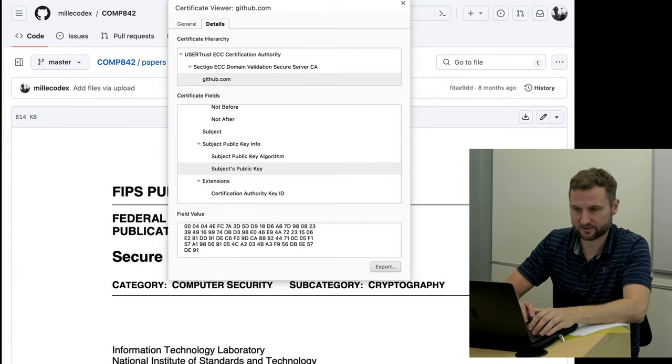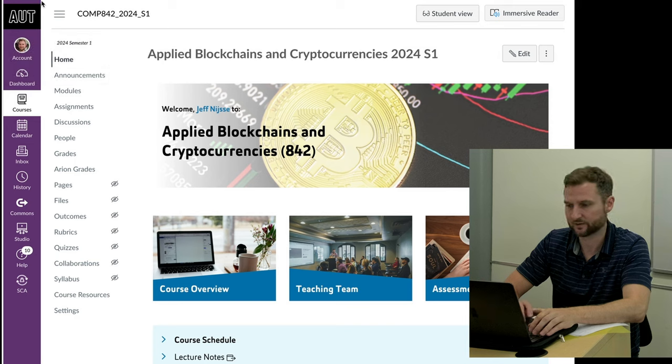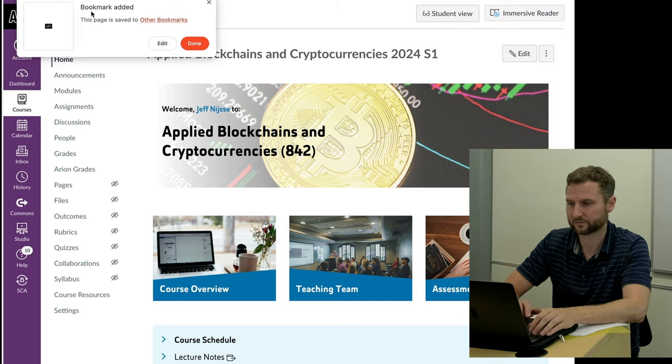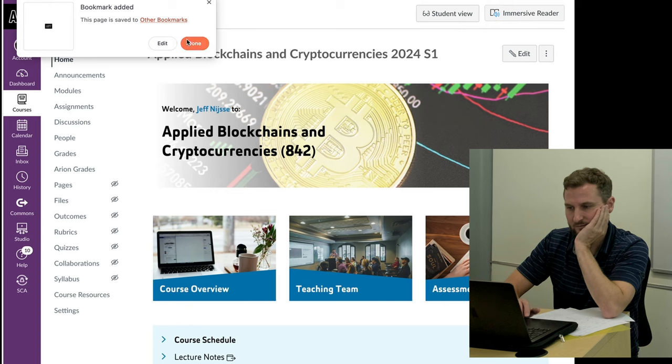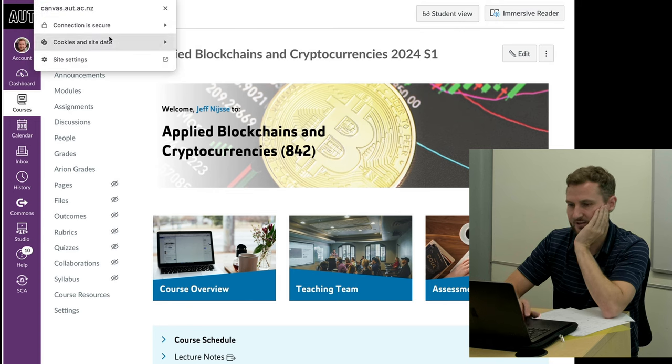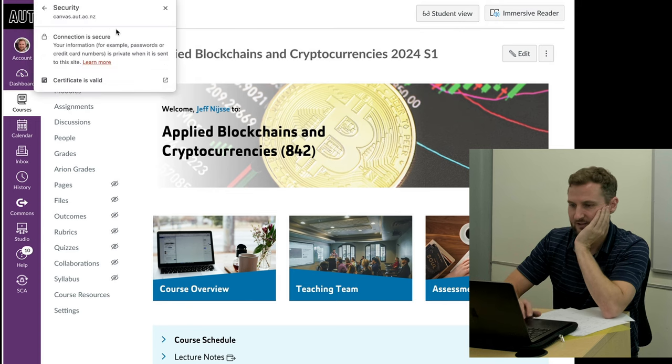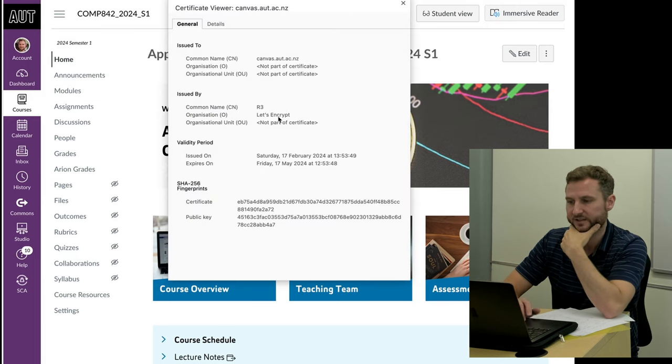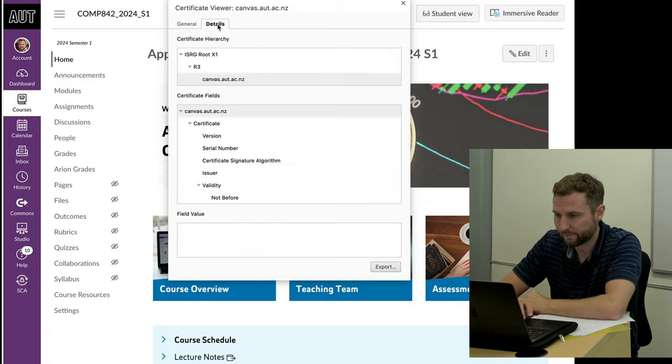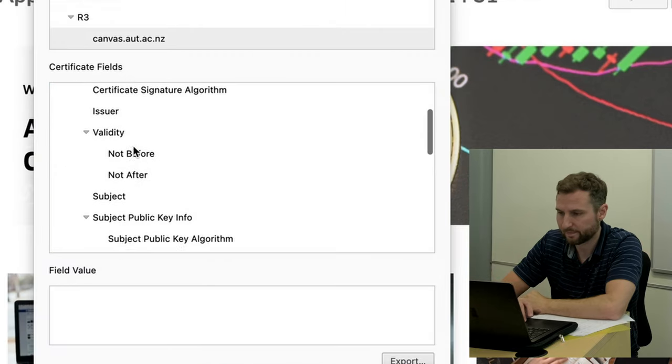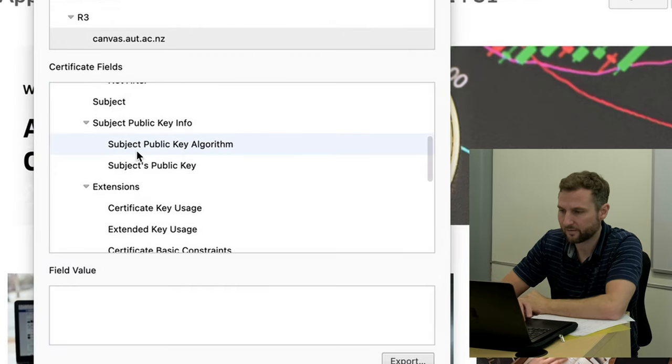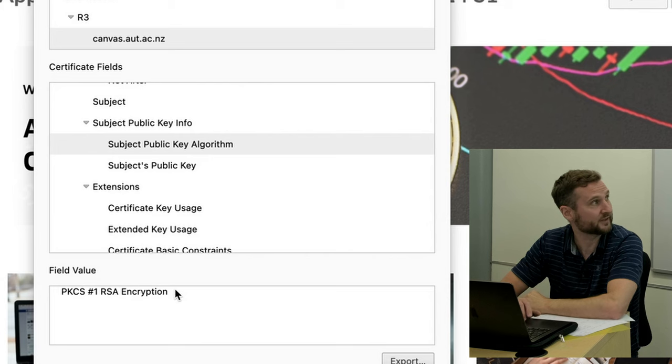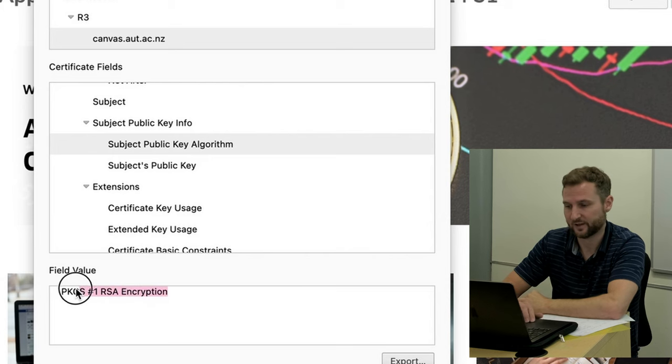Now I said about Canvas, so let's go to Canvas. Let's see what Canvas says. Public key algorithm here on Canvas, again I know it's tiny for you, but it says RSA encryption.